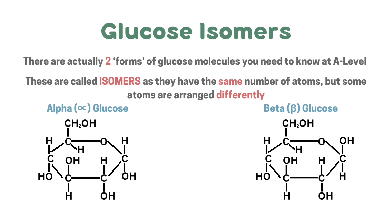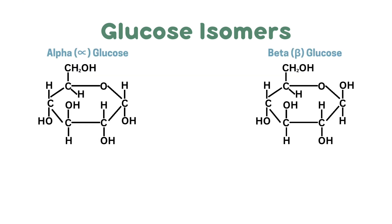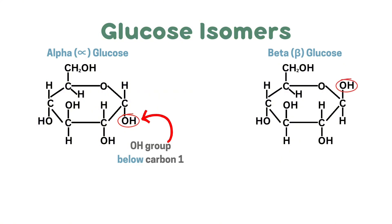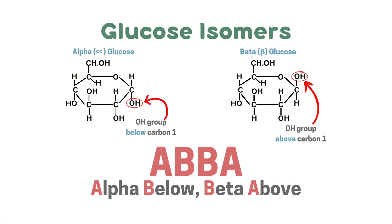Let's have a look at them in more detail. With alpha glucose, the OH group is below carbon one, but with beta glucose the OH group is above carbon one. This is the only structural difference between the two isomers. A good way to remember is ABBA: alpha below, beta above. Alpha below means the OH group is below carbon one in alpha glucose, and beta above means the OH group is above carbon one in beta glucose.